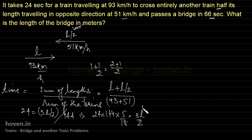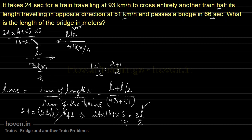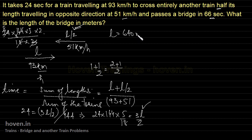I have to find out L. Taking 2 to that side and bringing 3 down: 24 into 144 into 5 into 2 divided by 18 into 3. Simplifying: 18 cancels with 144 giving 8, and 3 cancels with itself, giving 64 multiplied by 10, so L equals 640 meters.